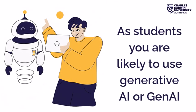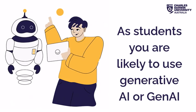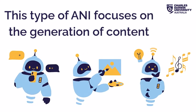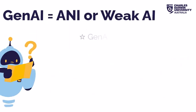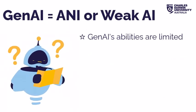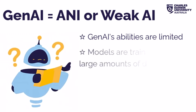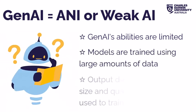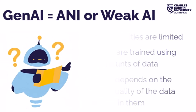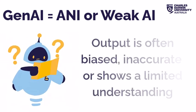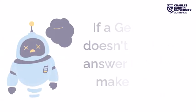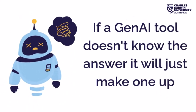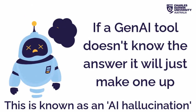As students, you are likely to use generative AI, or Gen AI. This type of artificial narrow intelligence focuses on the generation of content such as text, visual works and music. Gen AI models are trained using large amounts of data, and the output depends on the size and quality of the data used. Output is often biased, inaccurate or shows a limited understanding of the topic. If a Gen AI tool doesn't know the answer, it will just make one up. This is known as an AI hallucination.